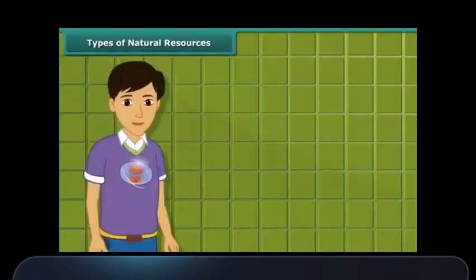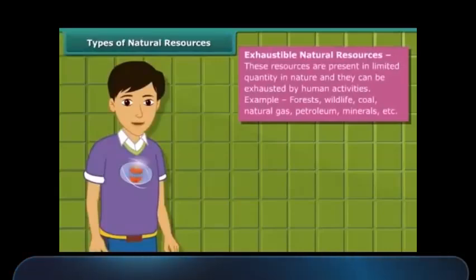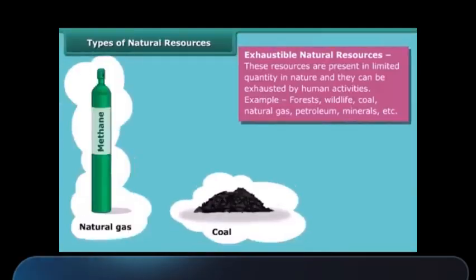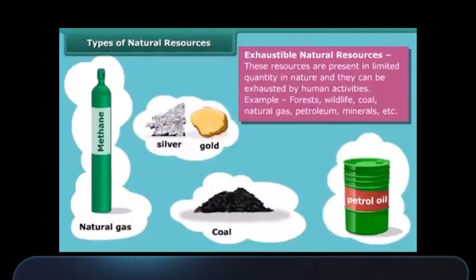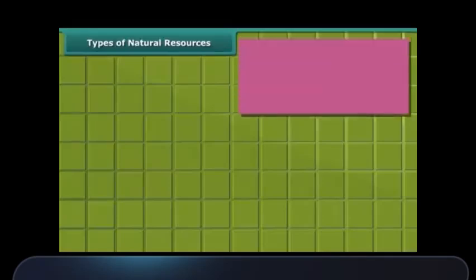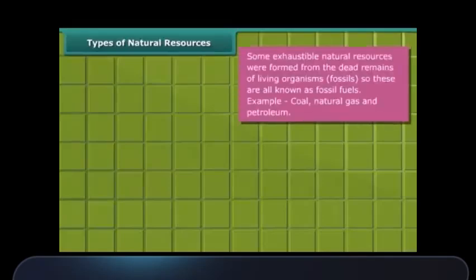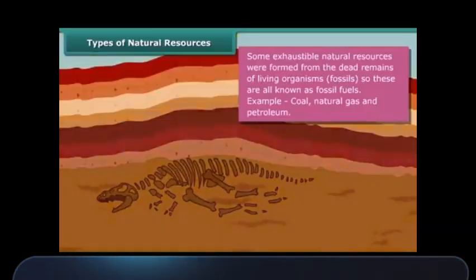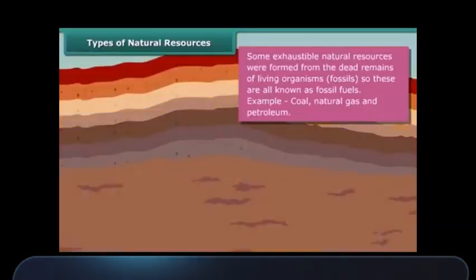On the other side, the amount of exhaustible resources is limited, and they can be exhausted by human activities and consumption. Forests, wildlife, coal, natural gas, petroleum, and minerals are examples of these resources. Some exhaustible resources like coal, natural gas, and petroleum were formed from the dead remains of living organisms called fossils, and hence these are also known as fossil fuels.